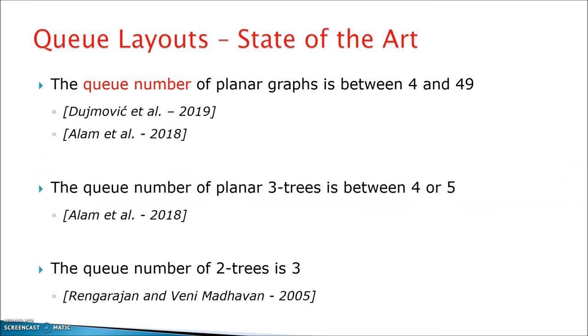Queue layouts are also very important and very well studied. It's a bit less understood what is the queue number of planar graphs. There is for now just a lower bound of 4 and an upper bound of 49, which has actually been proved recently as the first constant upper bound for the queue number. For planar trees and 2-trees, we have some better results. For 3-trees, we have 4 or 5 and for 2-trees, we have a tight bound of 3.